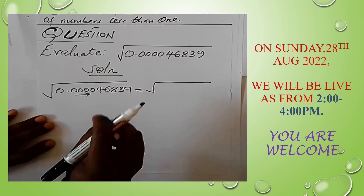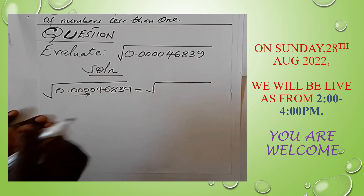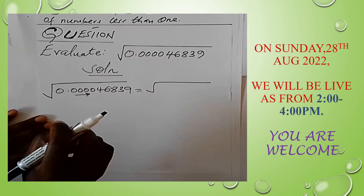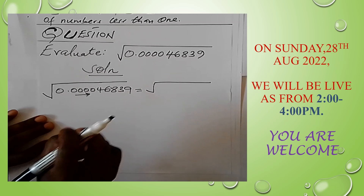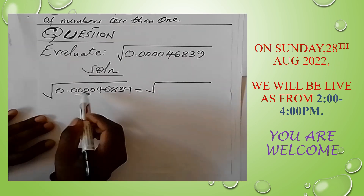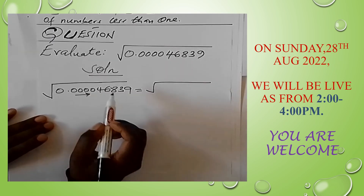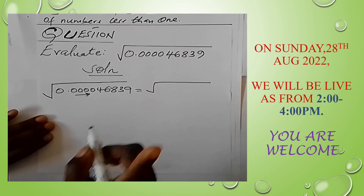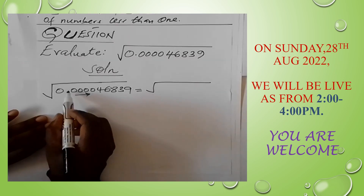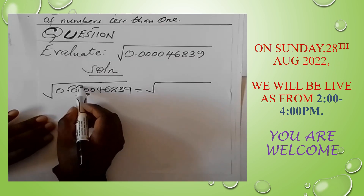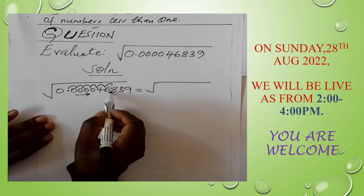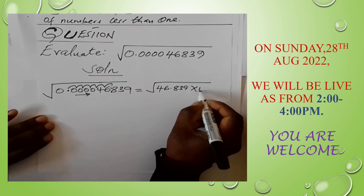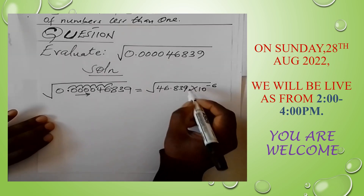If we were dealing with the cube root, the power would need to be divisible by 3. In this case we are dealing with square roots, so the power must be an even number. Since we moved 5 steps to reach 4.6839, we must move one more step, making it 6 steps total. The decimal moves: 1, 2, 3, 4, 5, 6. Therefore in standard form we write 46.839 times 10 to the power minus 6.